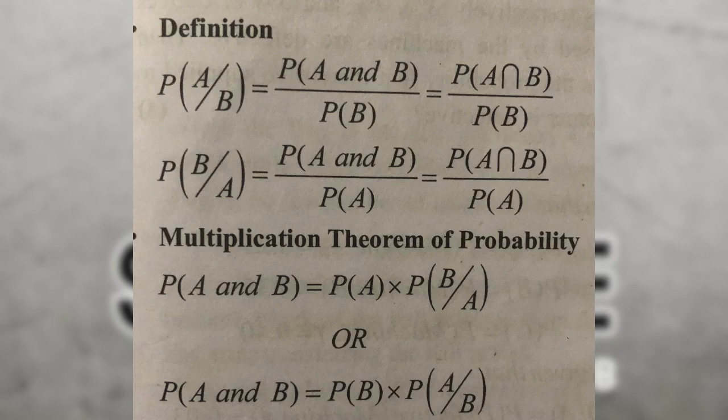This is the multiplication theorem. P of A and B is equal to P of A multiplied by P of B given A. Equivalently, it equals P of B multiplied by P of A given B.